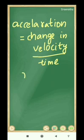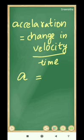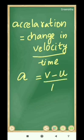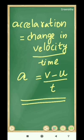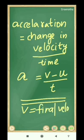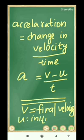Using symbols, we can write: a is the symbol for acceleration. So a is equal to change in velocity. The final velocity minus the initial velocity gives the change, so it is v minus u, divided by time, represented by t. Acceleration is equal to v minus u divided by t, where v is the final velocity and u is the initial velocity.